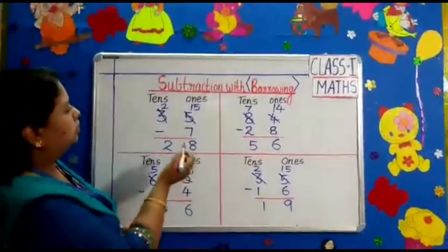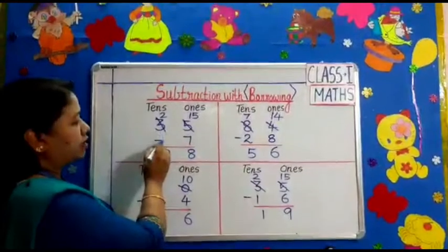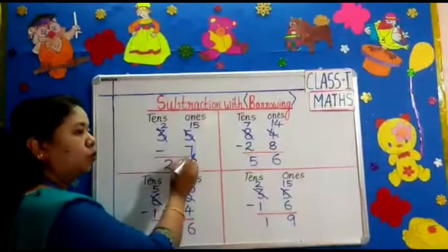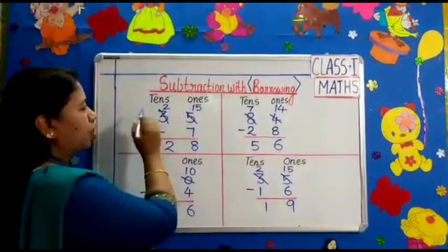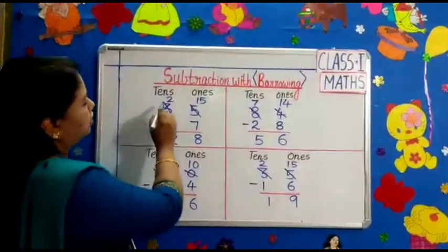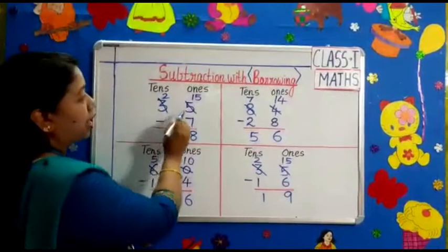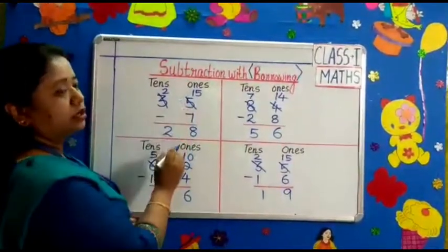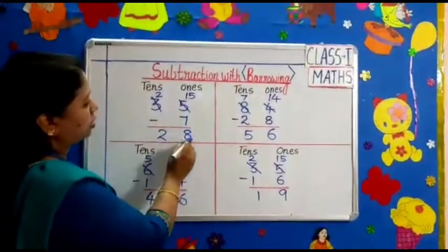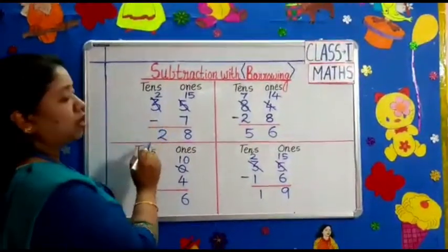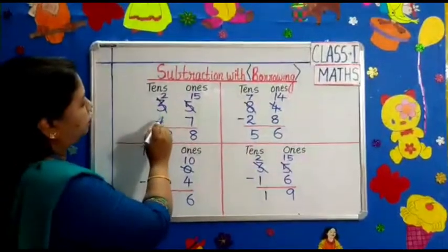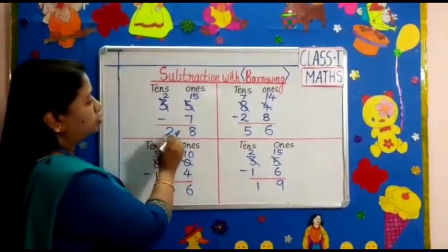I repeat. 35 minus 7. We will do 1's first. We will borrow 1 tenths from 3 tenths. So 3 becomes 2 and 5 becomes 15. 15 minus 7 is 8, and 2 comes down. So 35 minus 7 is 28.